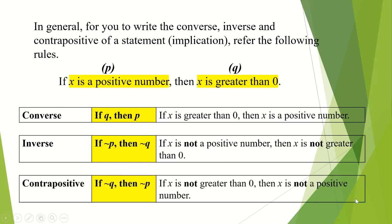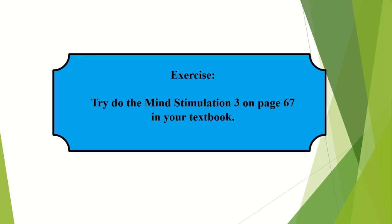And the last one will be contrapositive. Contrapositive is the negation of the converse. For the converse, you have if q, then p. As for the contrapositive, you will have if not q, then not p. In this case, your contrapositive will be: if x is not greater than zero, then x is not a positive number. You may try to do the mind stimulation activity on page 67 in your textbook.